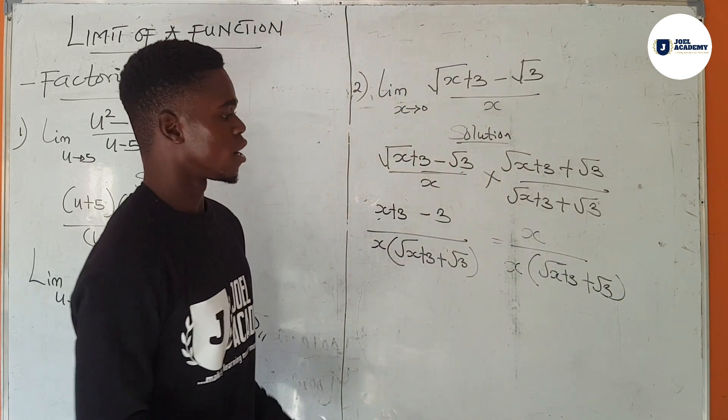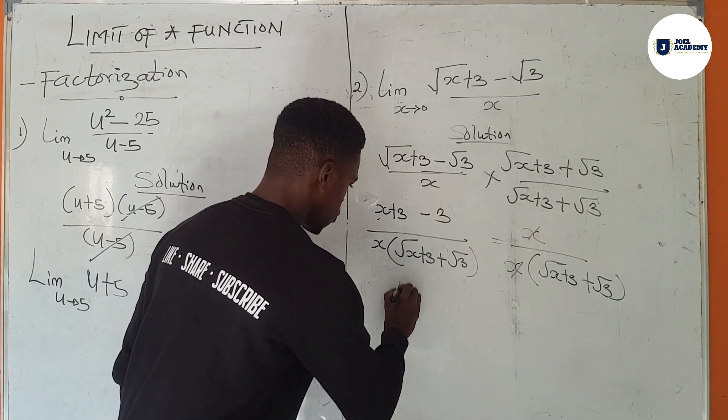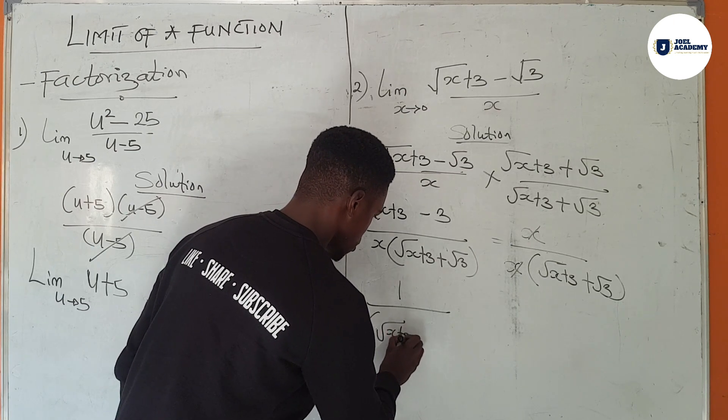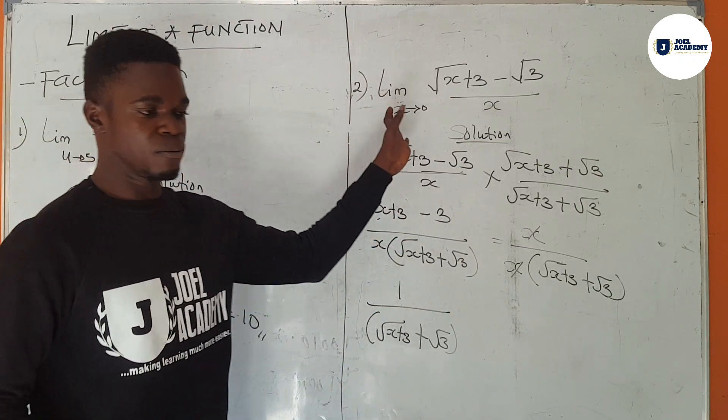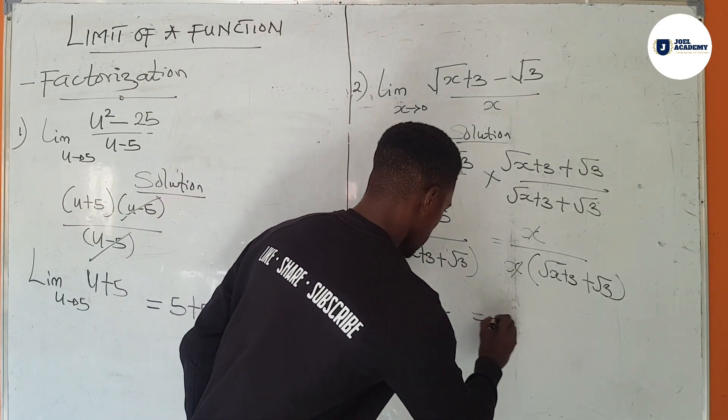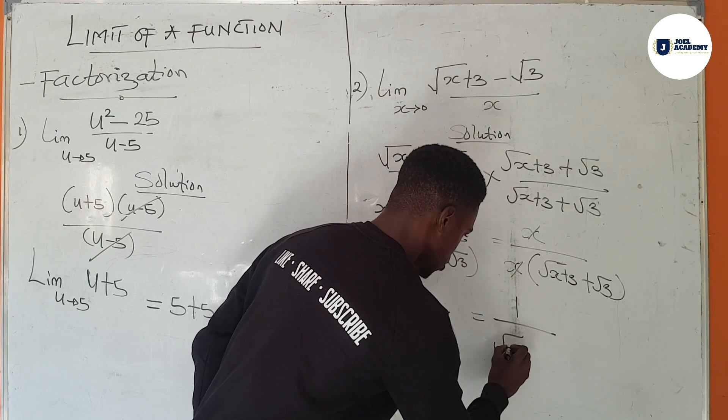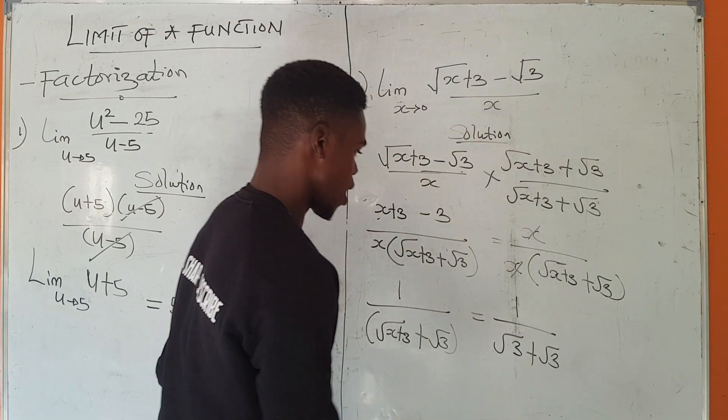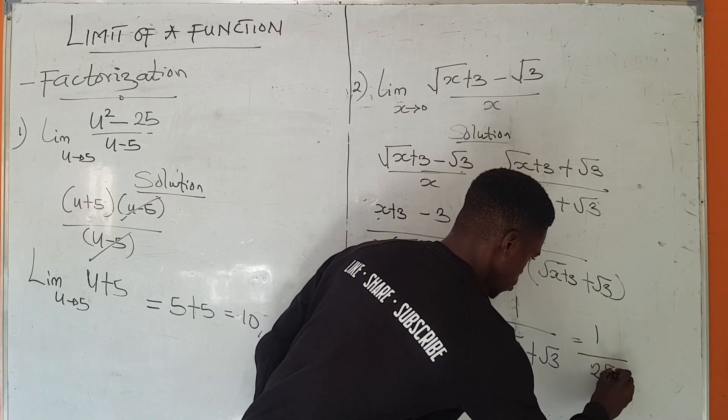You can easily see from this point that this x cancels this x. Then we have left 1 over the root of x plus 3 plus the root of 3. From this point, then we put in our limit. Our limit is 0. So we put in 0. We end up having 1 over root of 0 plus 3, which is 3, plus root 3. Finally our answer becomes 1 over 2 root 3.